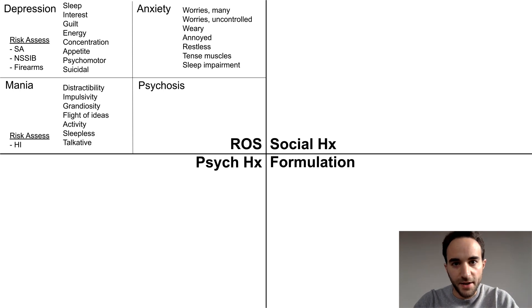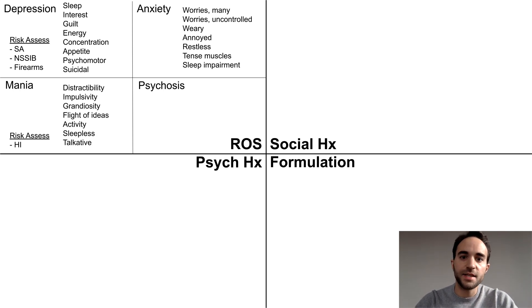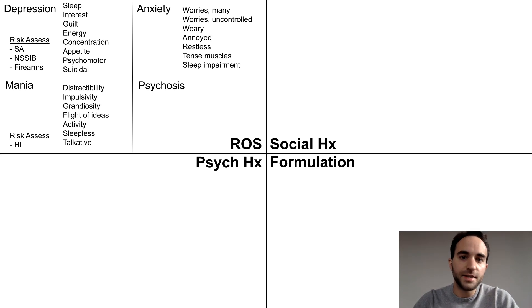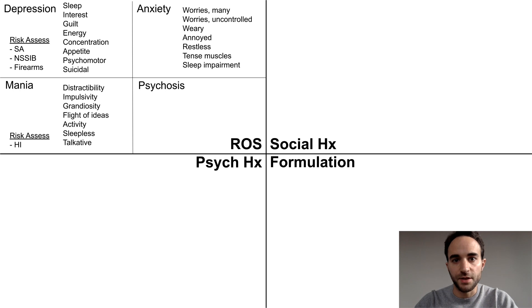Next is mania. You can use the mnemonic DIGFAST to ask about the symptoms of a manic episode. Since you will be asking about out of character and risky behaviors, this is also a good time to screen for homicidal ideation.